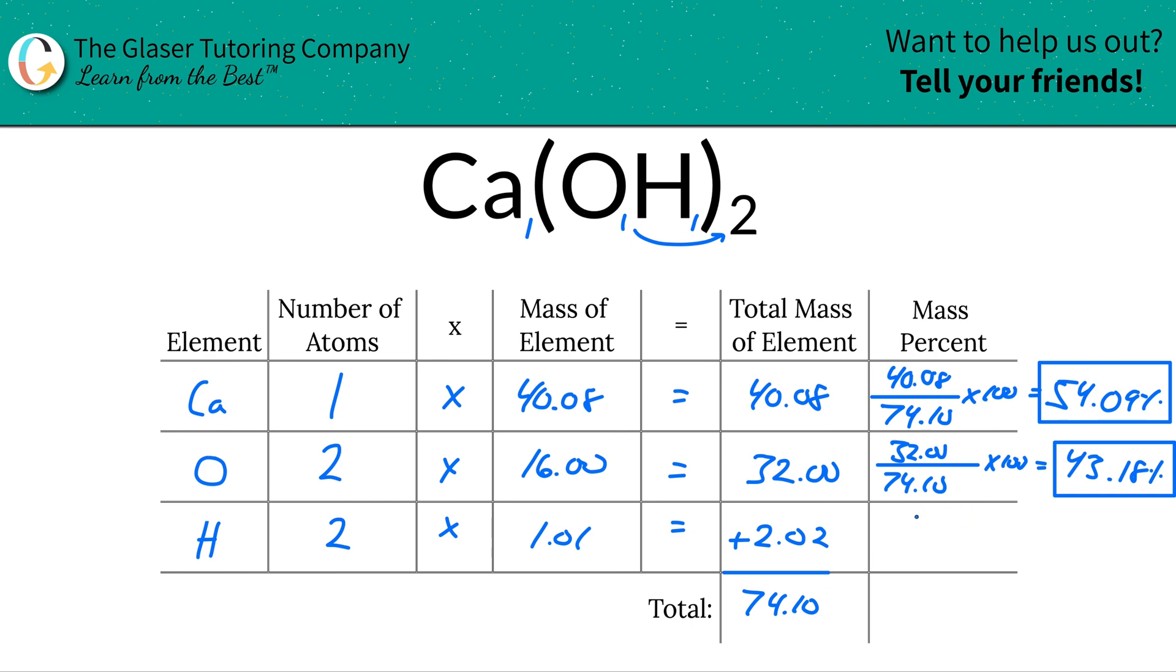And then last but not least, we're going to do hydrogen. So this is 2.02. And then the total mass that is of hydrogen divided by then the total mass of the compound, 74.10, multiply that bad boy by 100. So the percent here will now be 2.73 or so percent. All right, so that's the percent composition of hydrogen or the mass percent of hydrogen.